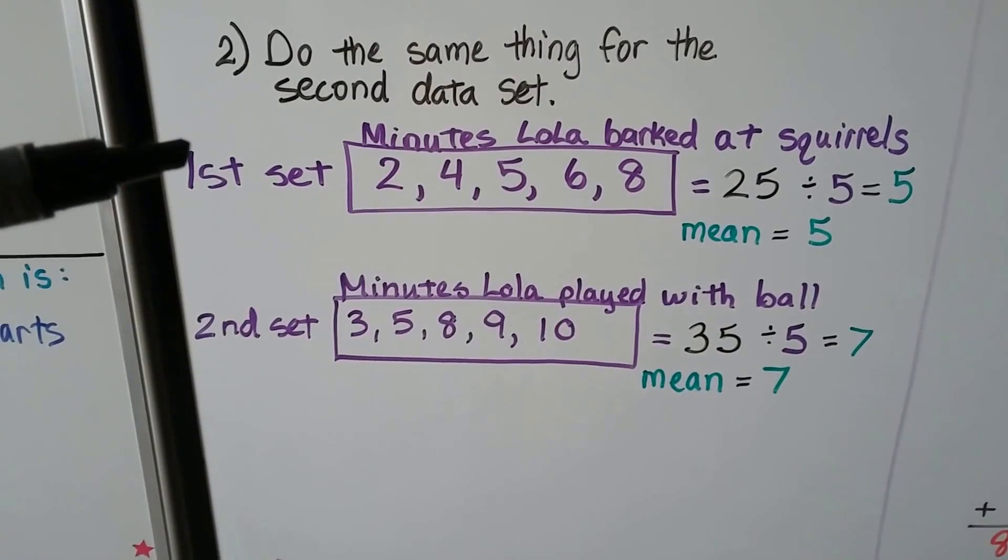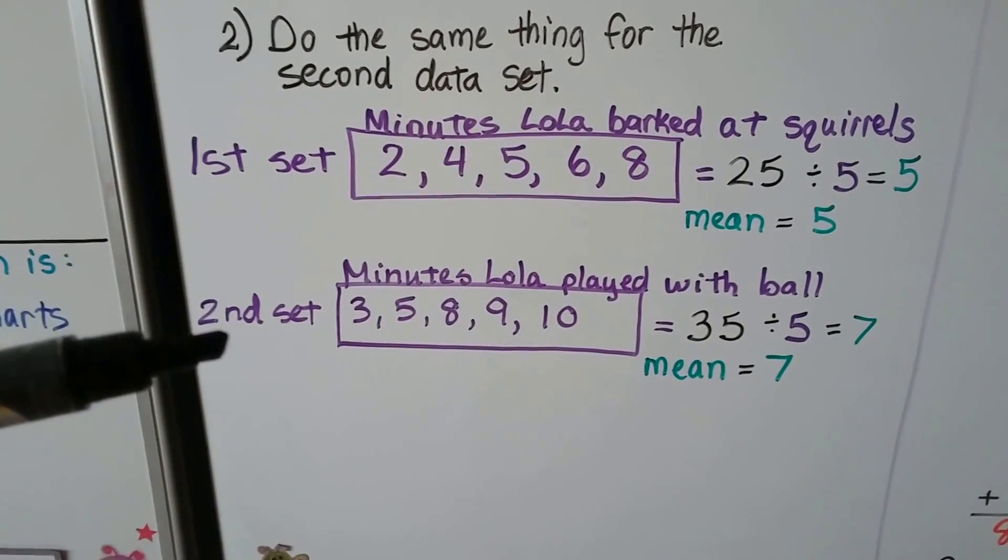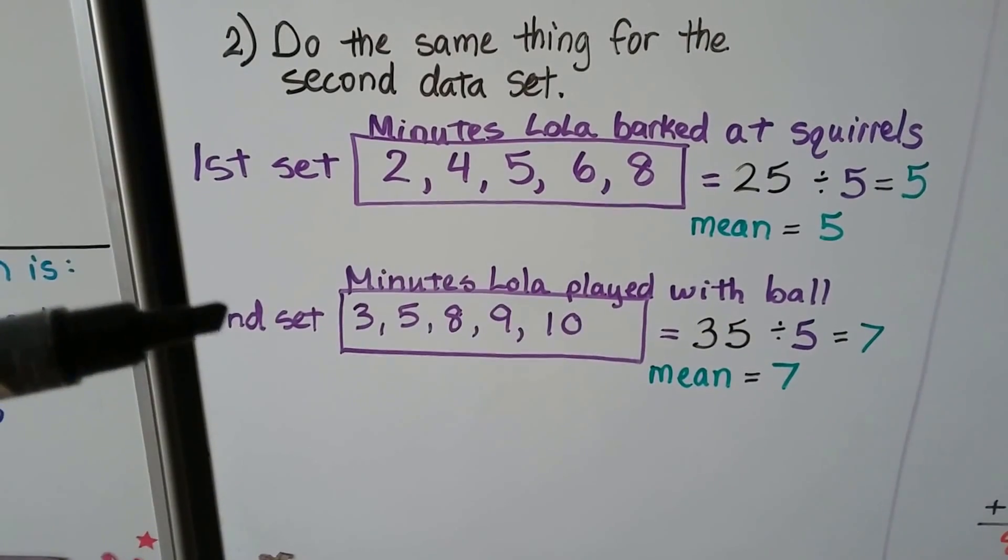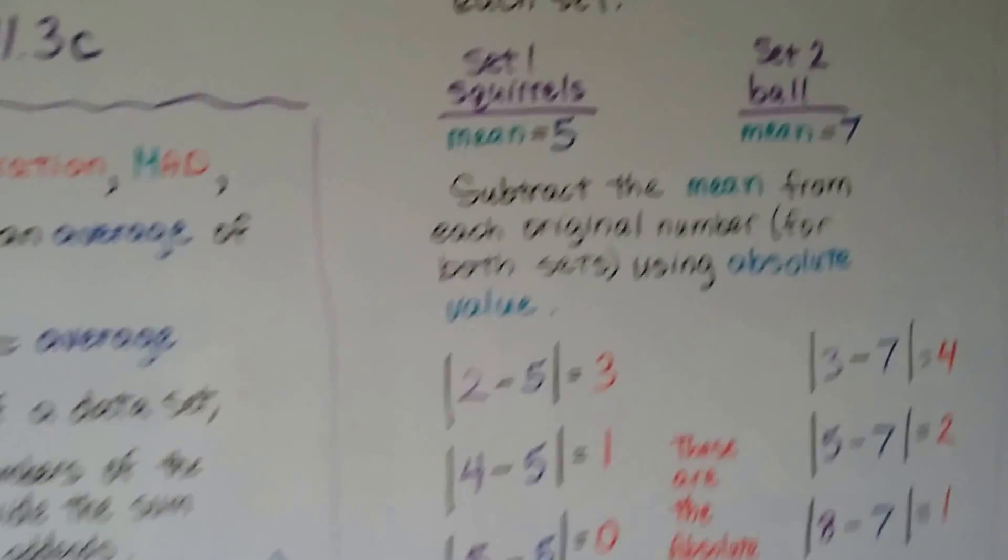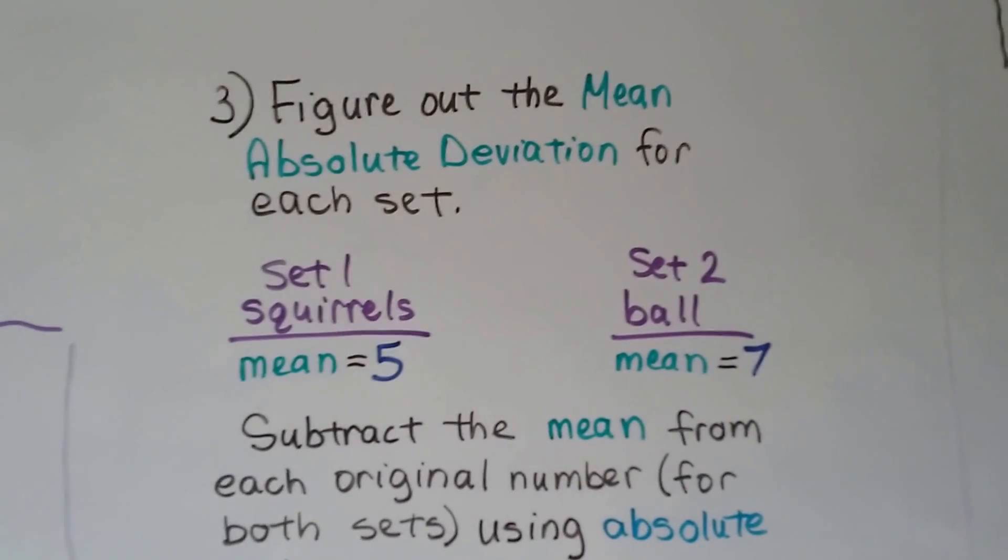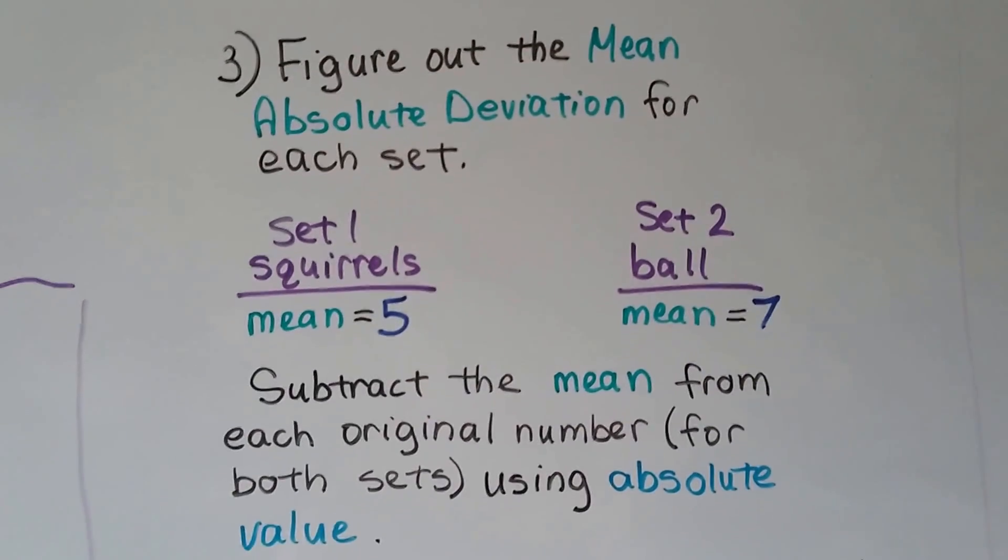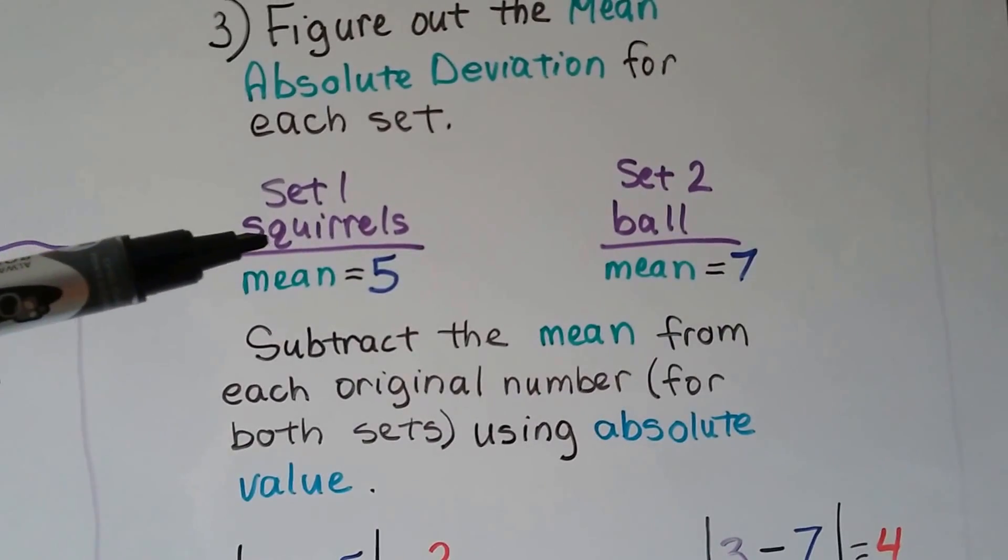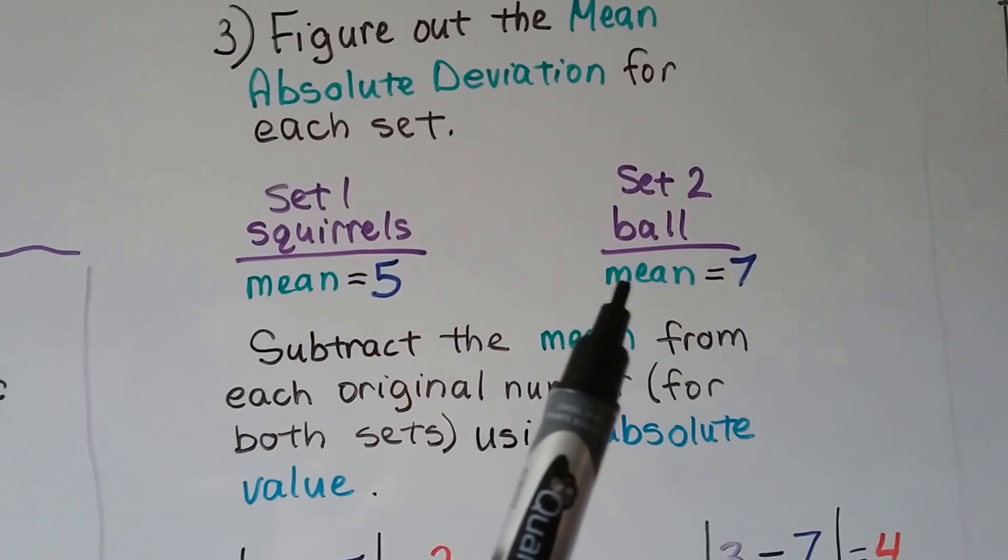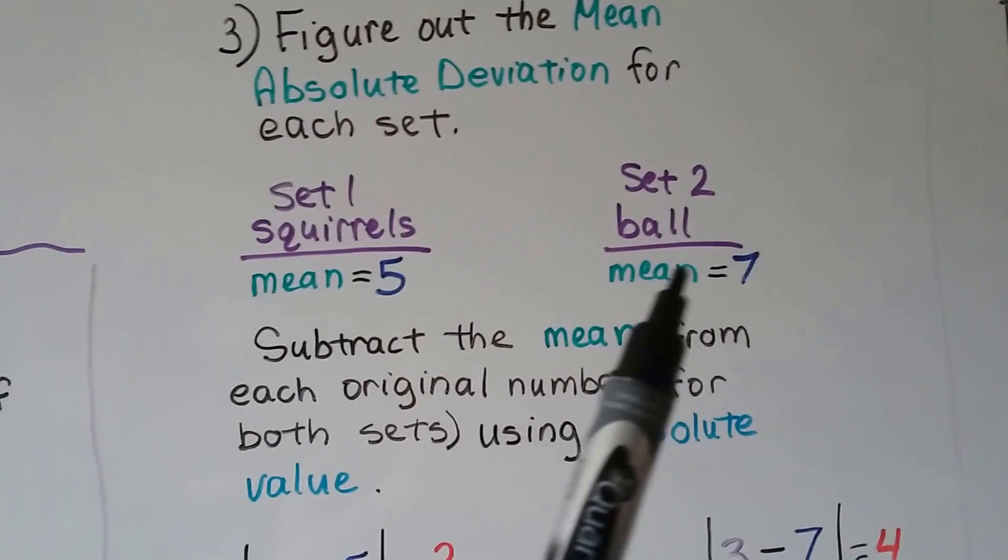My first data set, my average, my mean is a 5. My second data set, the average, the mean is a 7. The very next thing we're going to do is figure out the mean absolute deviation for each set. Barking at squirrels, the mean was 5. Playing with a ball, the mean was 7.